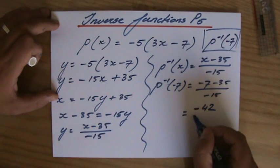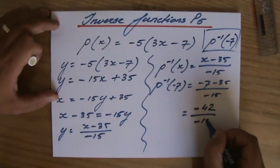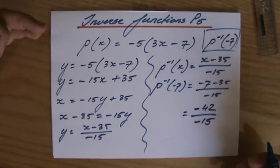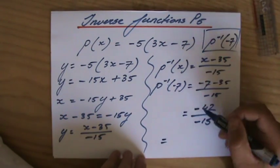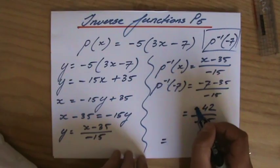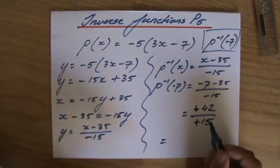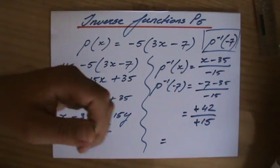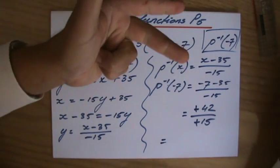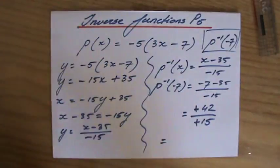Top-heavy fraction, improper. Let's turn that into a mixed number. It's a negative divided by negative, so my answer is going to be positive. 42 over 15. How many times does 15 fit into 42? Well, 15, 30, 45—that's too much.